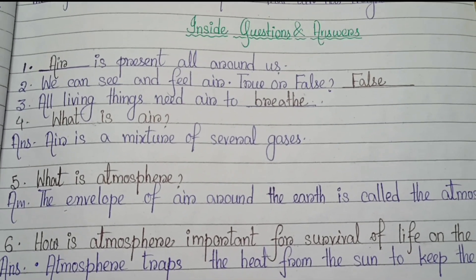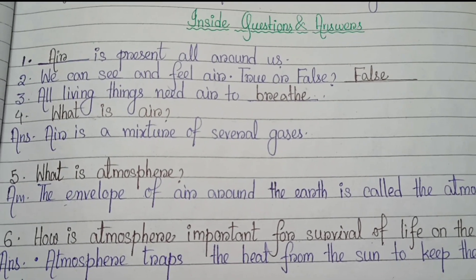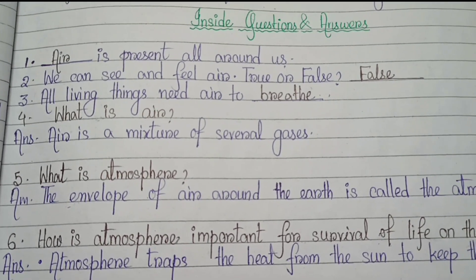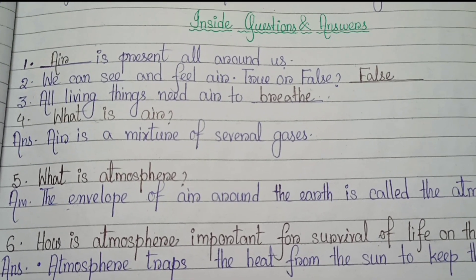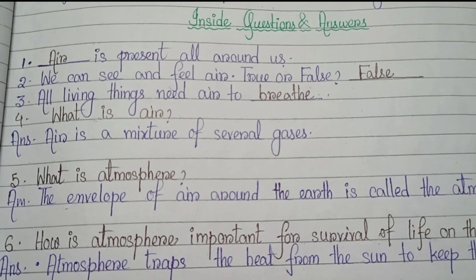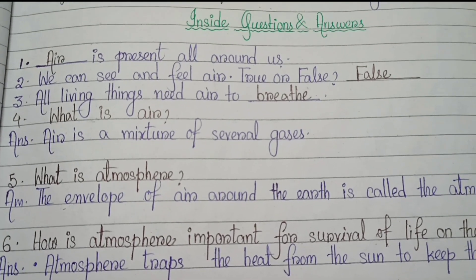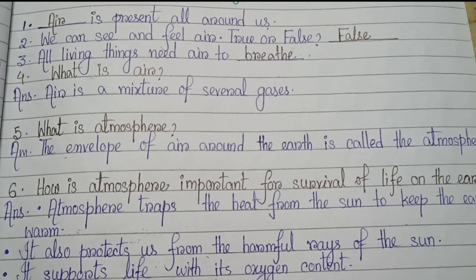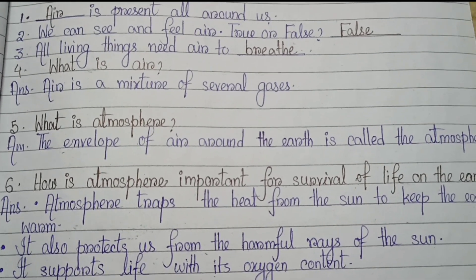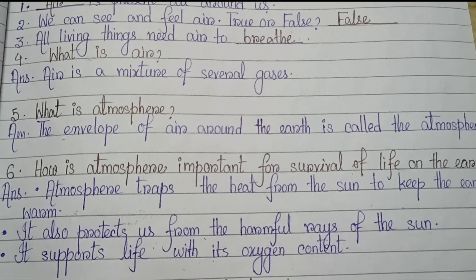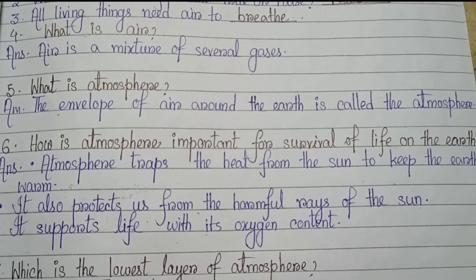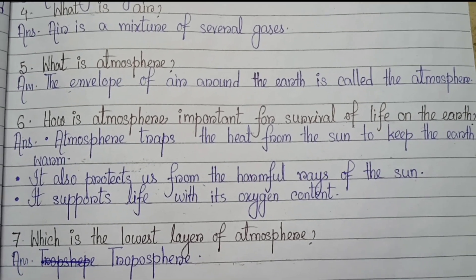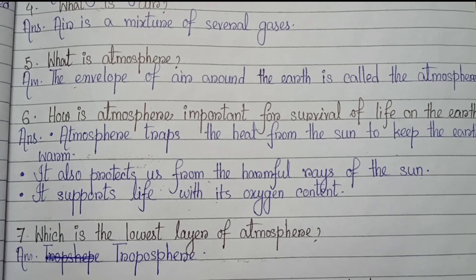Number 1: Air is present all around us. Number 2: We can see and feel air — True or False? False. Number 3: All living things need air to breathe. Number 4: What is air? Air is present of several gases. Number 5: What is atmosphere? The envelope of air around the earth is called the atmosphere.